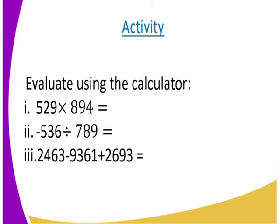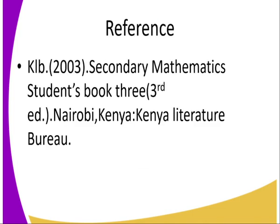This is the activity for today. You are required to solve using the calculator. Number one: 529 times 894 equals. Number two: negative 536 divided by 789. Number three: 2,463 minus 9,361 plus 2,693 equals. Just solve that using the calculator.